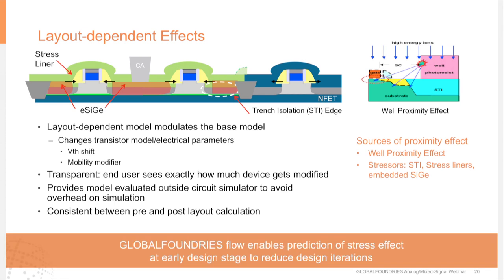With the Global Foundries approach, you get two visible parameters — threshold voltage and mobility modifiers — and can gain intuition on how to control them in your design. An important point: one of the challenges in analog design is reducing iterations when going from schematic-level to post-layout simulation. At older nodes, the typical issue was parasitics. Now we have the same issue with layout-dependent effects. This flow emphasizes a methodology for the designer at the schematic level to predict the impact of LDE on their design, reducing iterations.